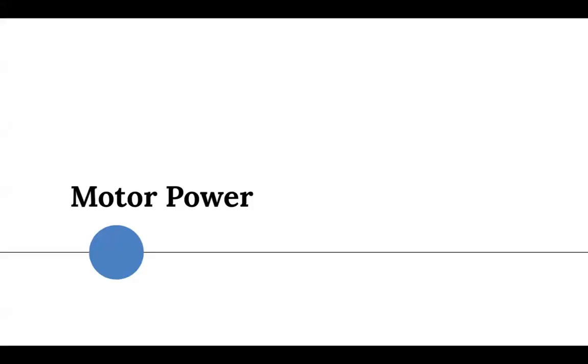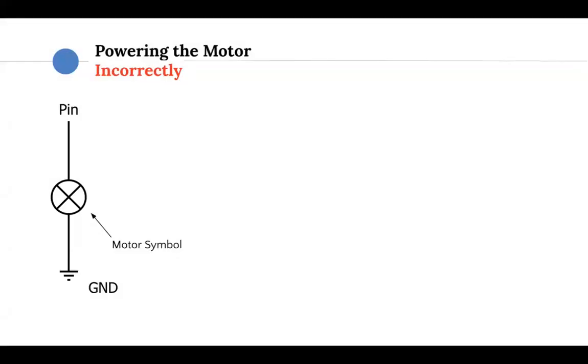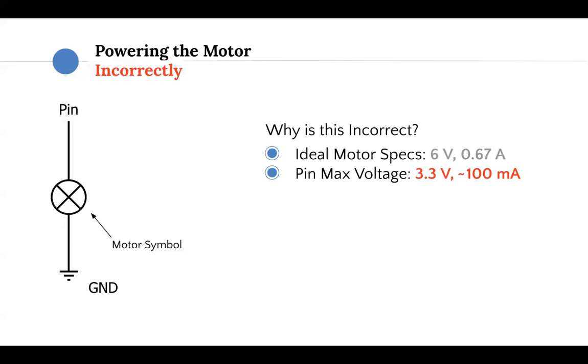So first off, motor power. Here's an incorrect diagram of how to control the motor. The microcontroller pin is supplying the signal and power to the motor, and then this is ground. Why is this not the optimal way of powering the motor? Well, the ideal motor specs are 6 volts and 0.67 amps, whereas the pin maximum voltage that it could output is 3.3 volts and a current of approximately 100 milliamps, which is not nearly enough for running the motor.